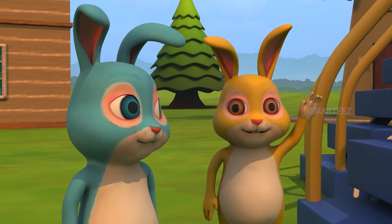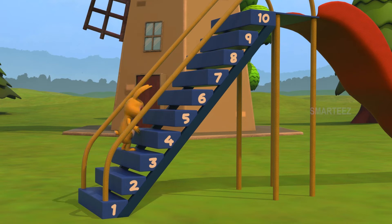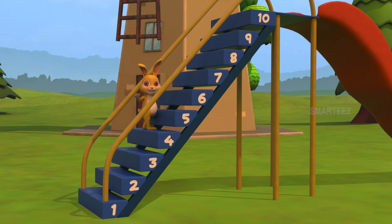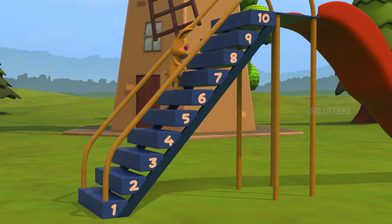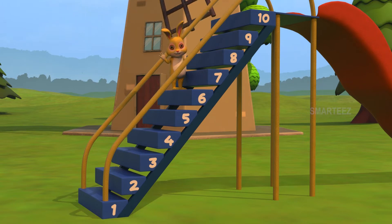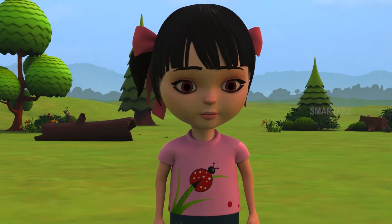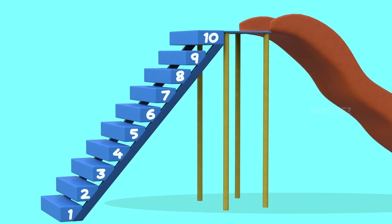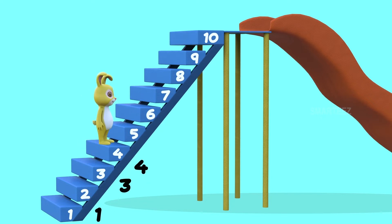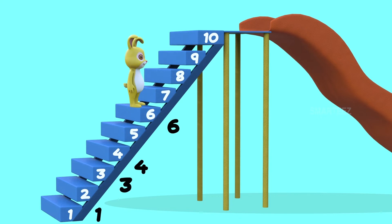Ok, here we go. Step 1. That's 1. That's 3. That's 4. That's 6. Now, I hopped from 1 to 3, then to 4, then to 6. Is this ascending too? Yes. It is ascending. Let me explain. The bunny jumped from step 1 to step 3, then step 3 to step 4 and finally from step 4 to step 6. So, the numbers went 1, 3, 4, 6. Since the numbers are going up, we call them ascending numbers.